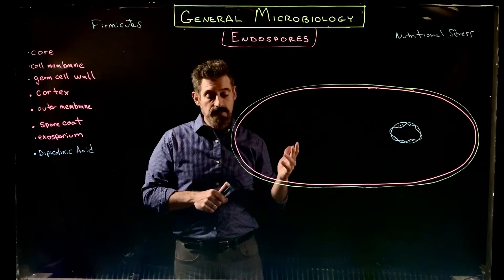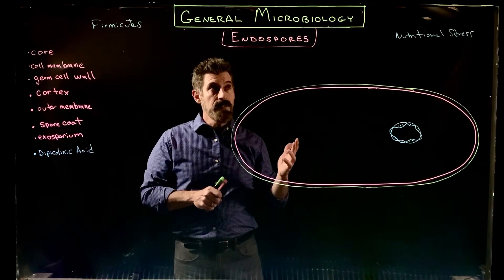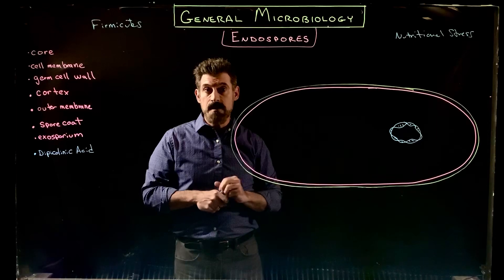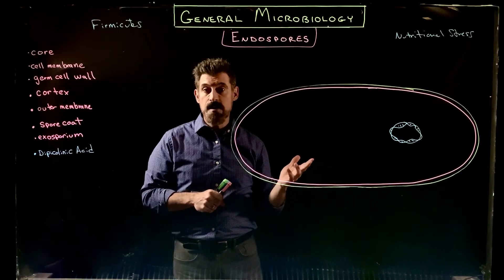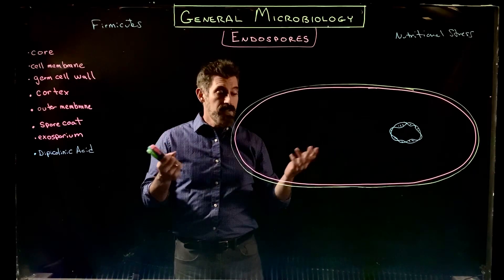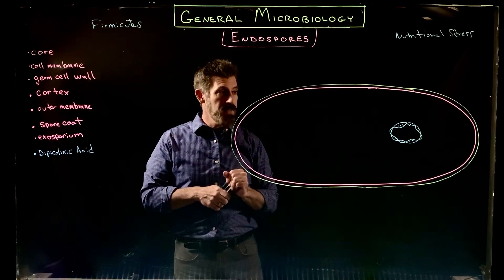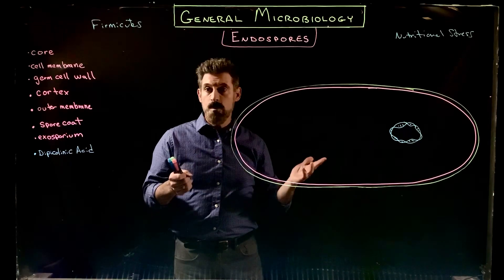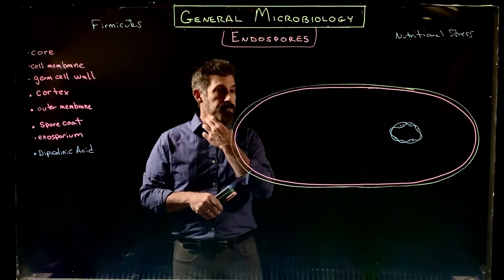It is particularly noteworthy in that there are certain bacteria like Bacillus anthracis that produce spores and can be a very dangerous pathogen. But there are mostly a lot of soil bacteria that are beneficial that can do this as well.